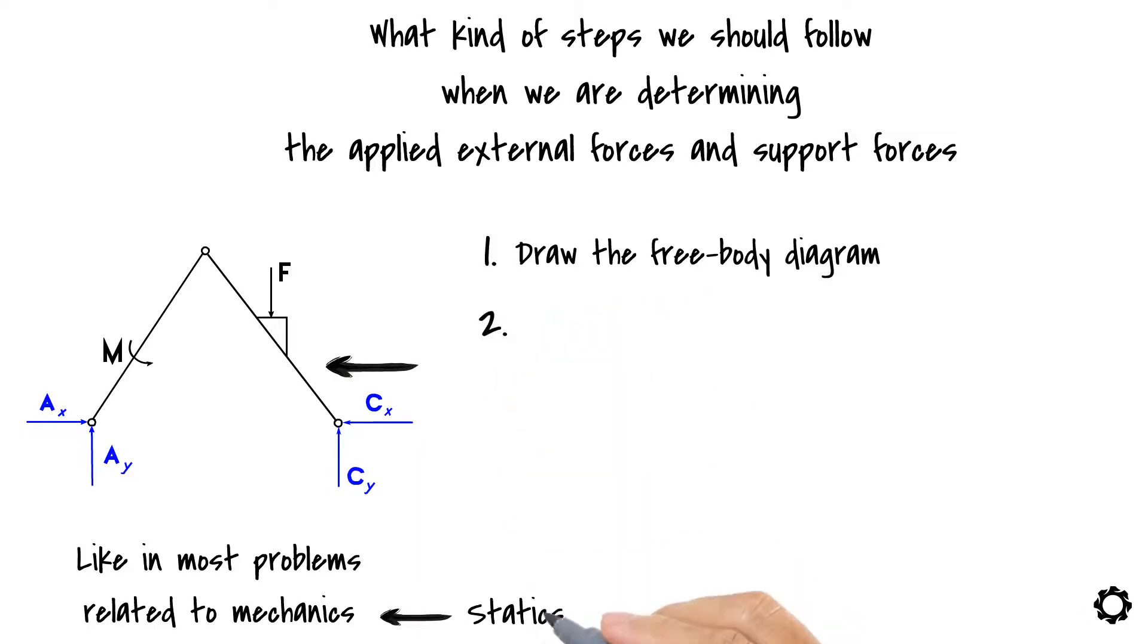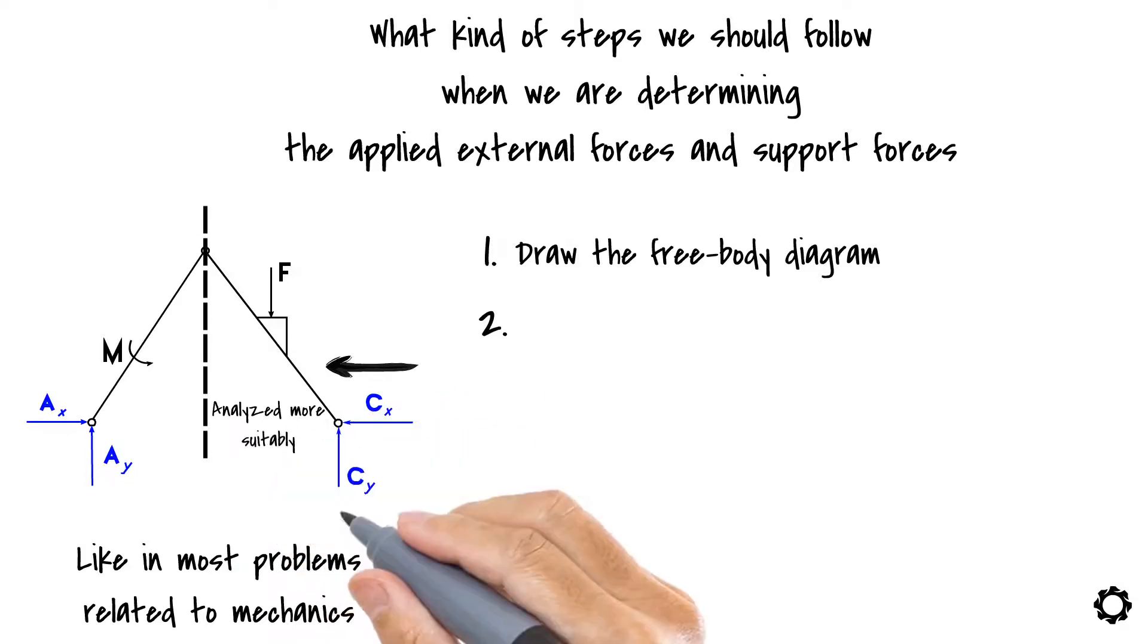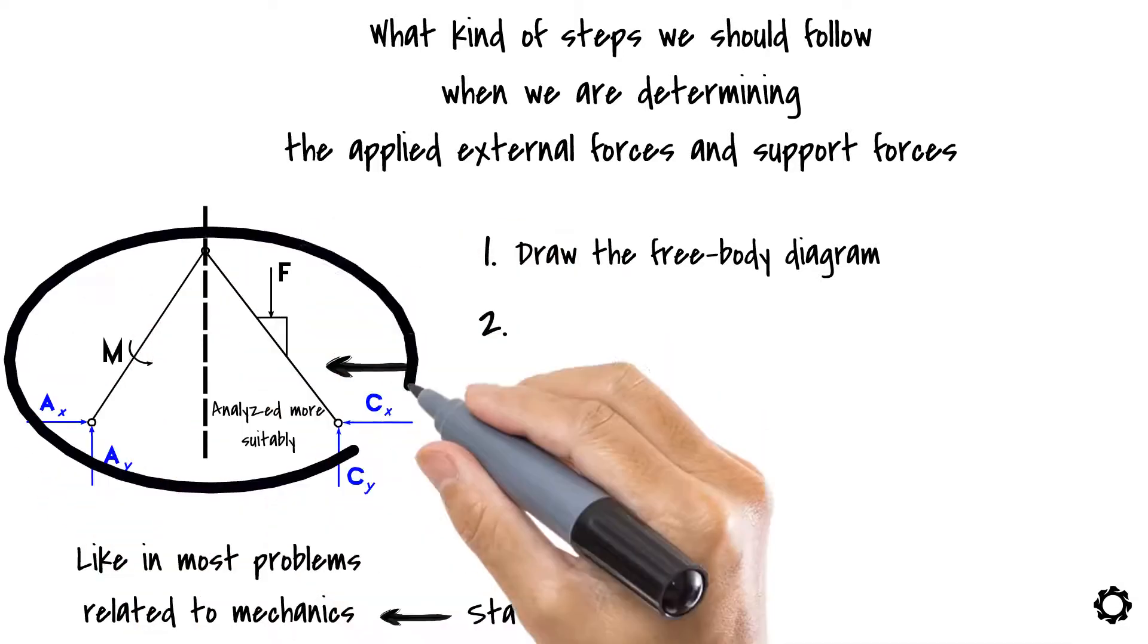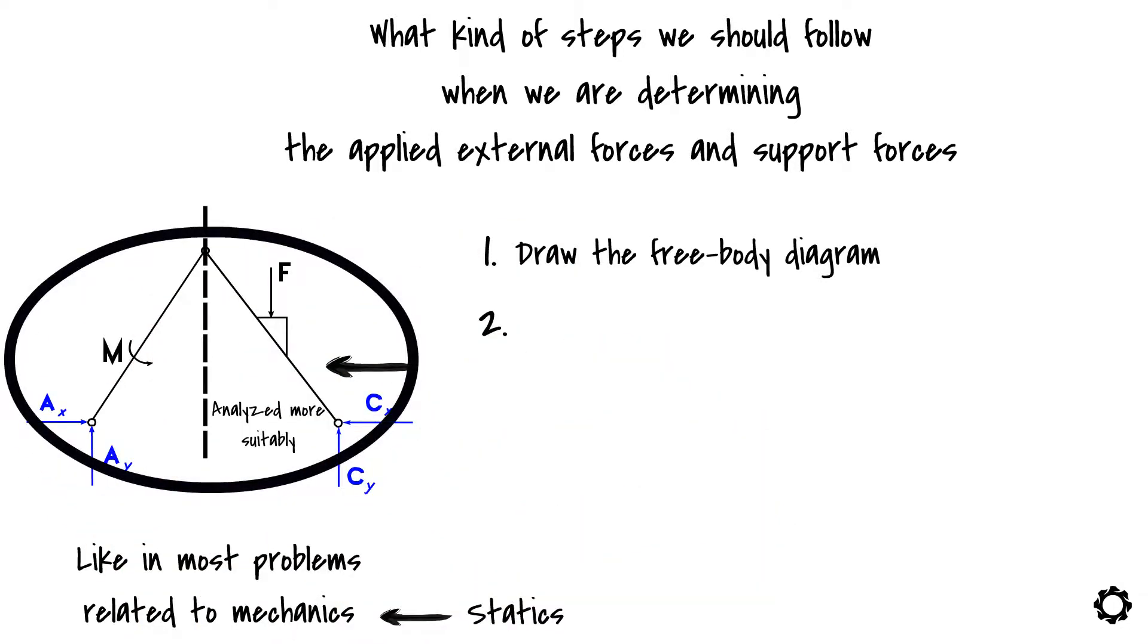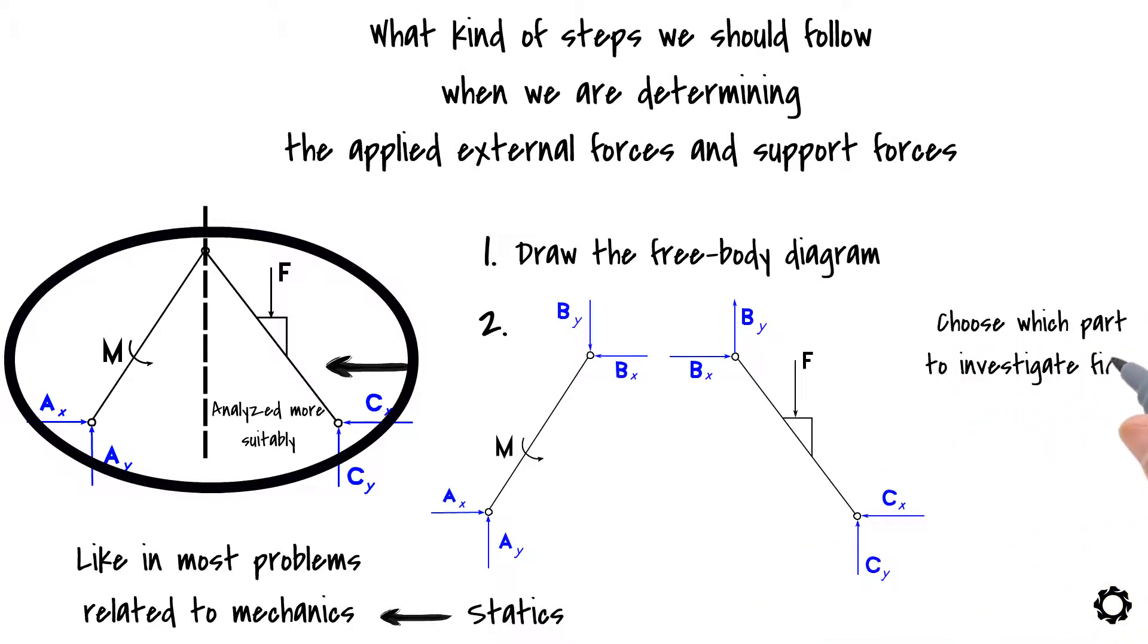Most often, however, we need to first disassemble the structure into separate parts which are analyzed more suitably than directly analyzing the whole structure. After disassembling has been done, we can draw the free body diagram of the separate parts and choose which part to investigate first. We can try to make this choice based on which method gives us a more direct solution.